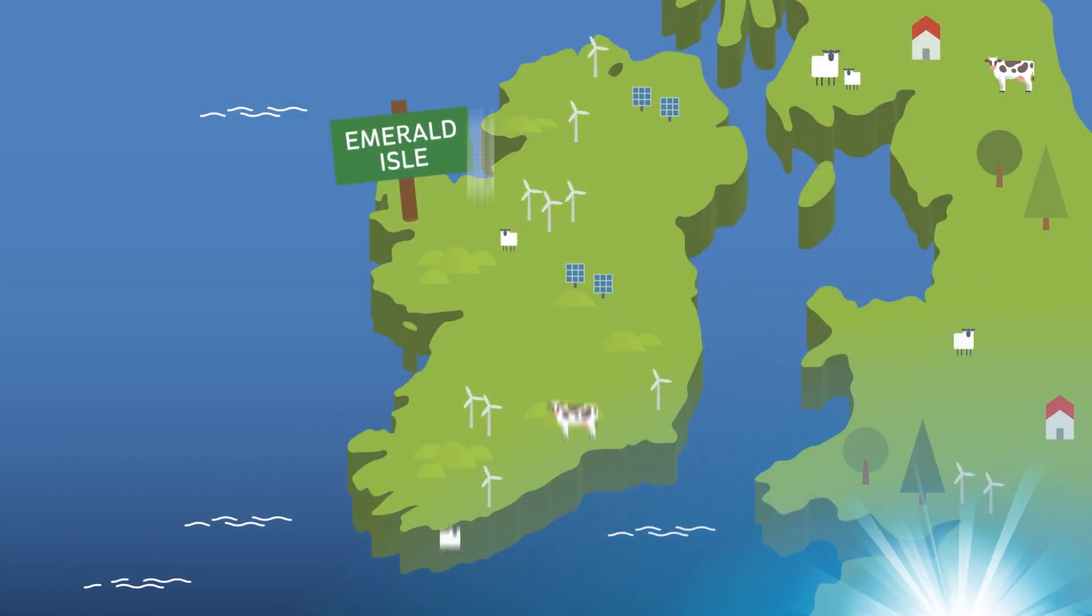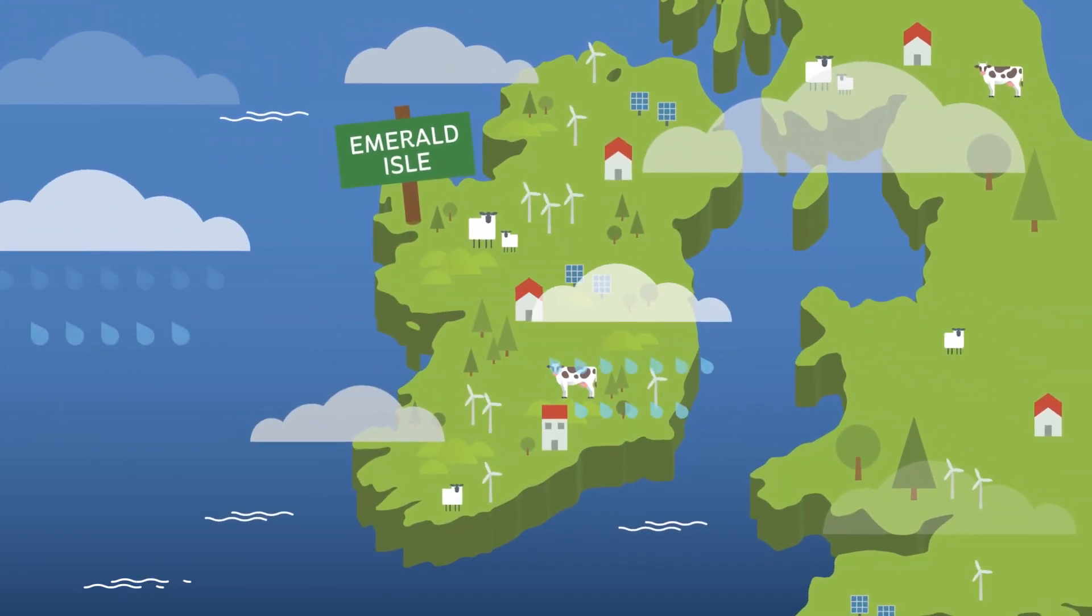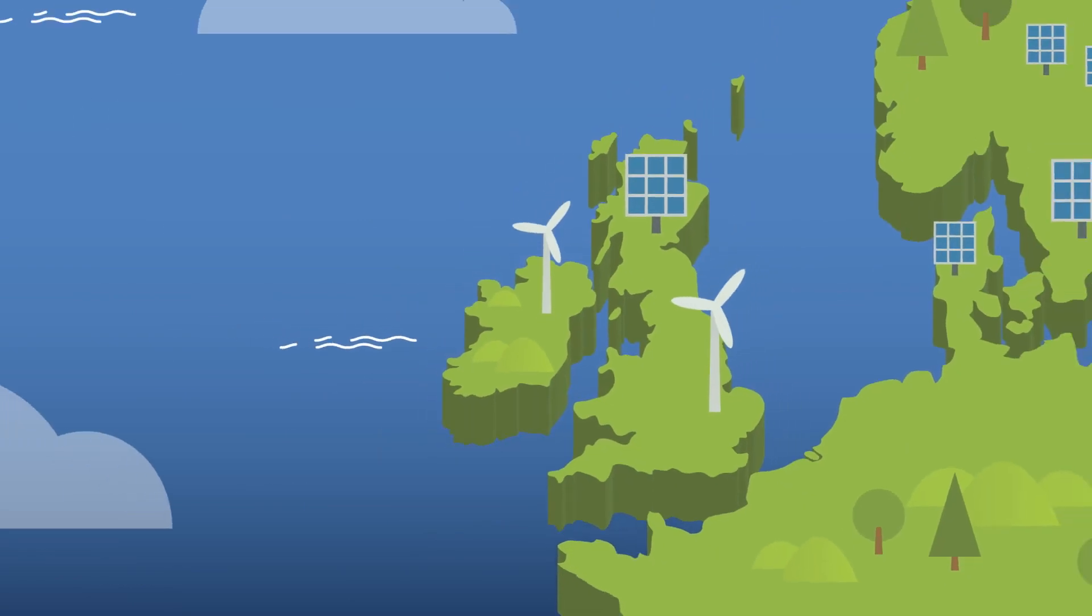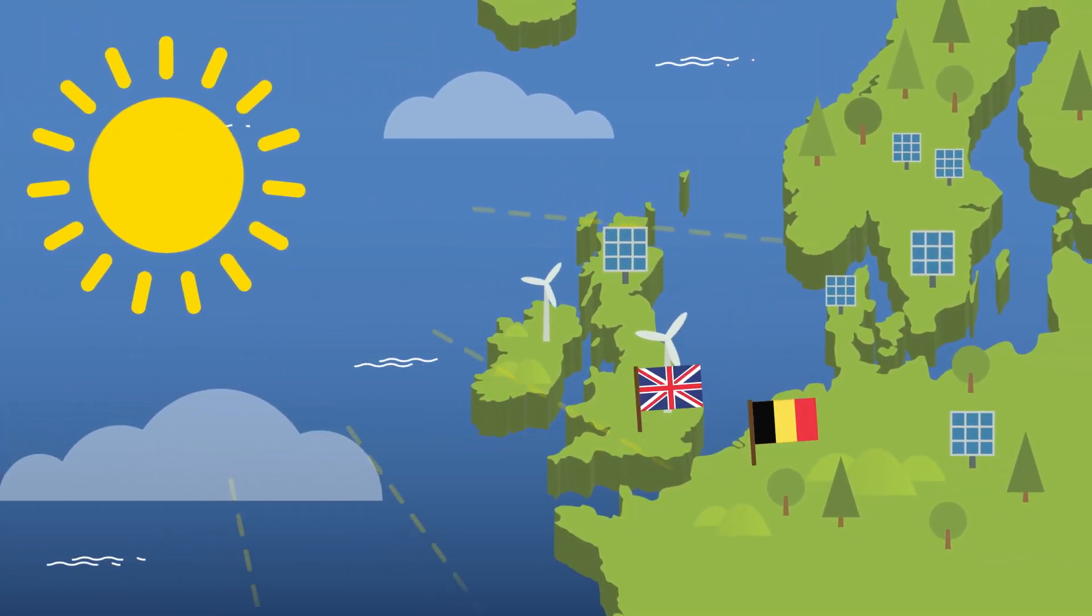Ireland is widely known as the Emerald Isle due to our mild temperate climate, which gets plenty of rain from the Atlantic. But did you know that Ireland also receives as much solar radiation as the UK and Northern Europe?